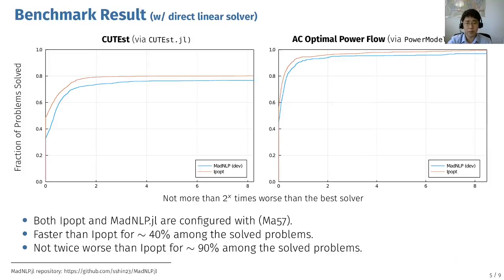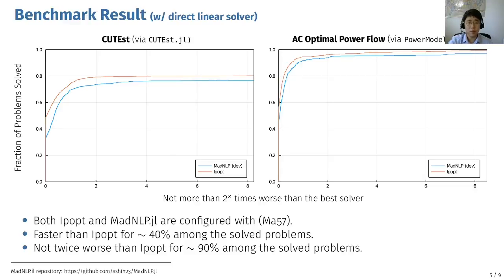So what's the current status of MadNLP? Here's a benchmark of the solver performance compared to the C++-based solver IPopt. We tested these two solvers against the classical CUTEst NLP dataset and ACOptima power flow problems. Both IPopt and MadNLP were configured with the MA57 direct linear solver. The core algorithm of MadNLP is implemented based on IPopt's implementation paper, so ideally MadNLP should perform similarly to IPopt. Based on these results, we can see that the performance of MadNLP is still a little bit worse than IPopt, but not significantly. Among the problems solved by either solver, about 40% of the time MadNLP was able to solve the problem faster than IPopt, and about 90% of the time it solved the problem no more than twice as slow as IPopt.